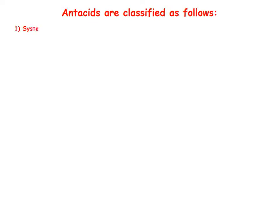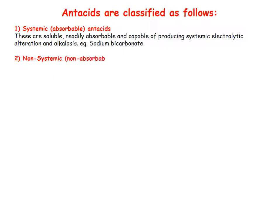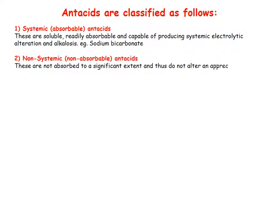Antacids are classified into different subclasses. Systemic antacids are soluble, readily absorbable, and capable of producing systemic electrolytic alteration and alkalosis — for example, sodium bicarbonate. Non-systemic antacids are not absorbed to a significant extent and do not produce an appreciable systemic effect. This group is further divided into subclasses.